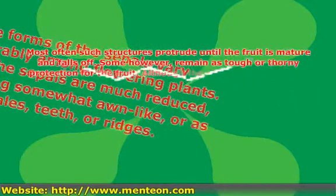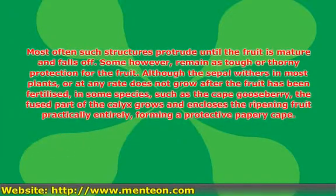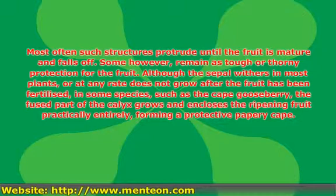Most often such structures persist until the fruit is mature and then fall off. Some, however, remain as tough or thorny protection for the fruit. Although the sepal withers in most plants after the fruit has been fertilized, in some species, such as the cape gooseberry, the fused part of the calyx grows and closes the ripening fruit practically entirely, forming a protective papery cape.